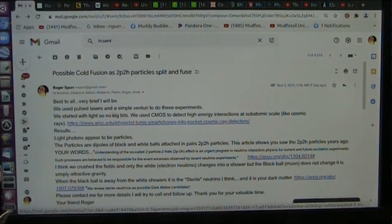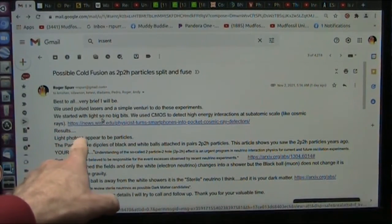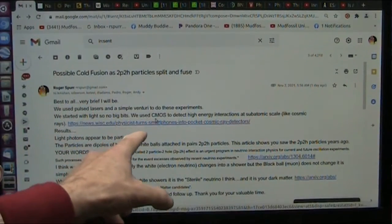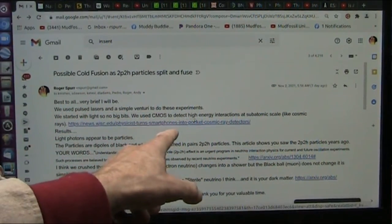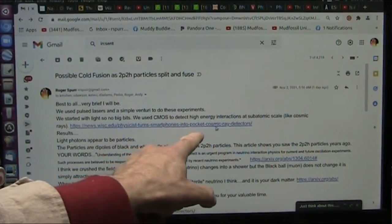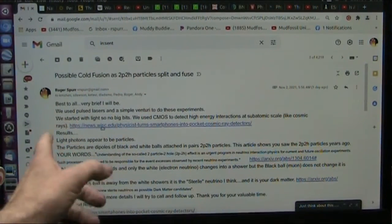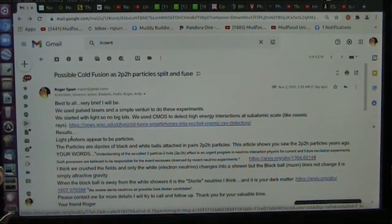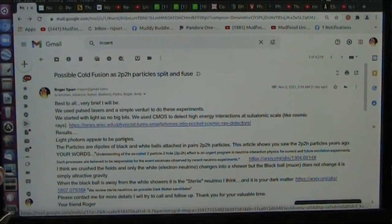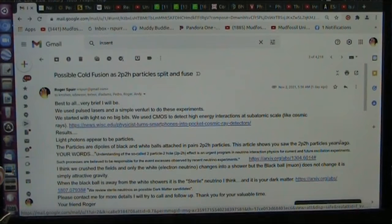I said best to all, very brief, I will be. We use pulse lasers, a simple venturi, to do these experiments. We started with light, so no big bits, no big particles. We use CMOS, which is what they use to detect high energy interaction, subatomic scale, like cosmic rays. And this is it right here. They turn smartphones into pocket cosmic ray detectors. So that shows that this is totally, and this is the exact same stuff they're using for CERN. It's identical. The result, light photons appear to be particles, which I show. The particles are dipoles, which I show, are black and white balls attached in pairs, which is the 2p2h particles, exactly what they saw. This article shows that you saw the 2p2h particles years ago.